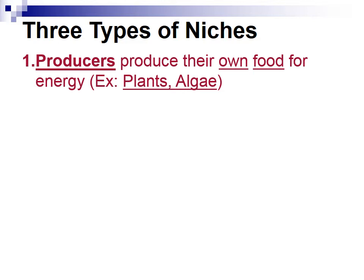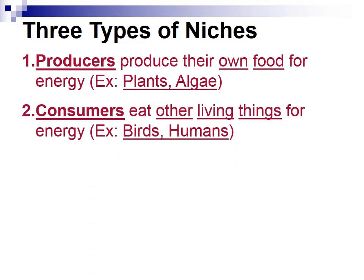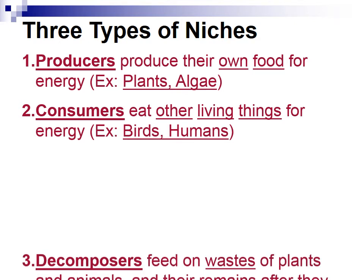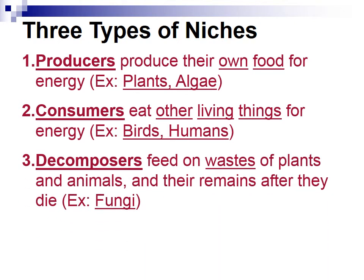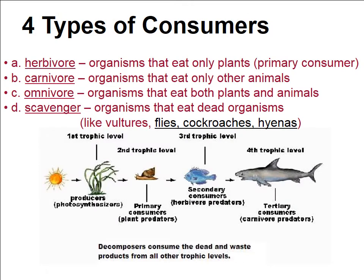Plants and algae are photosynthetic — that's what producers do. The second type of niche is called consumers. Consumers eat other things to get energy — birds, humans, basically anything that has to go hunting. Decomposers feed on waste of plants and animals and their remains after they die. Examples include fungus, vultures — things that basically wait for things to die and then absorb all of the nutrients from that dead thing. Bacteria are such organisms.